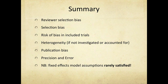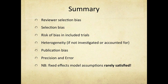In summary: reviewer selection bias should involve two independent authors; searches should use a wide-ranging strategy; risk of bias in included trials must be assessed — remembering a meta-analysis is only as good as the trials it includes; heterogeneity both clinical and statistical should be explored; publication bias should be assessed using funnel plots; and precision and error, specifically trial sequential analysis, should be considered.